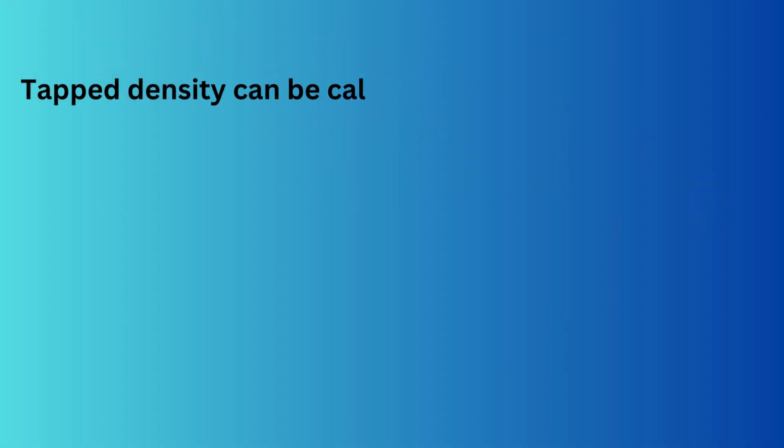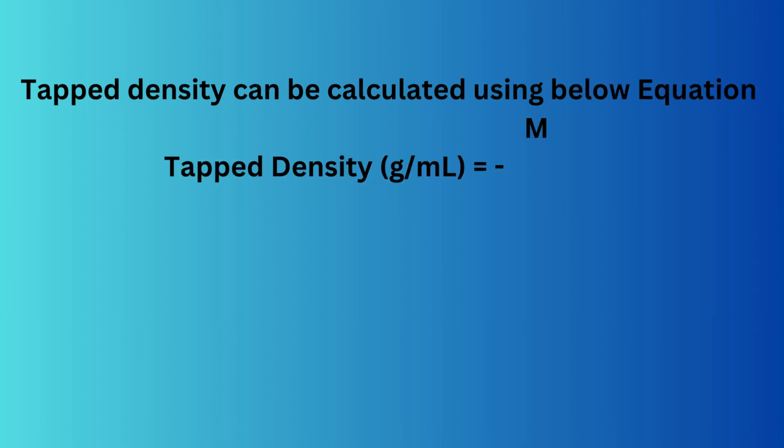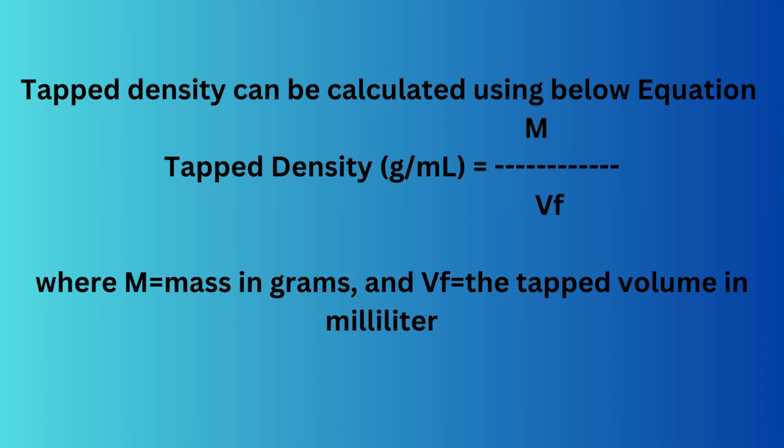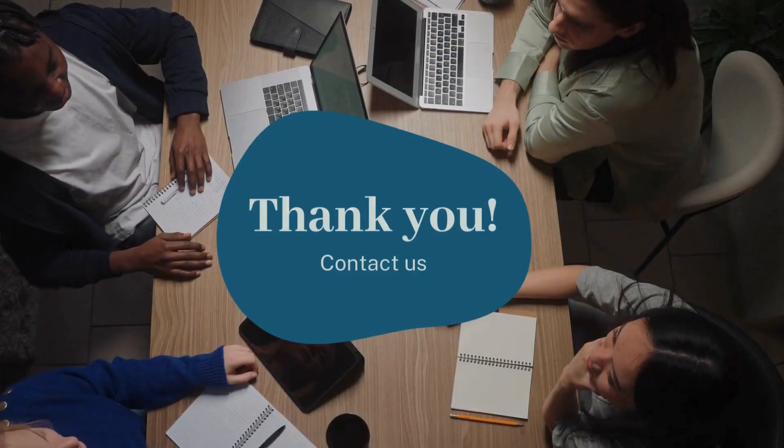Tap density can be calculated using the below equation: tap density equals m divided by vf, where m equals mass in grams, and vf equals the tapped volume in milliliters.